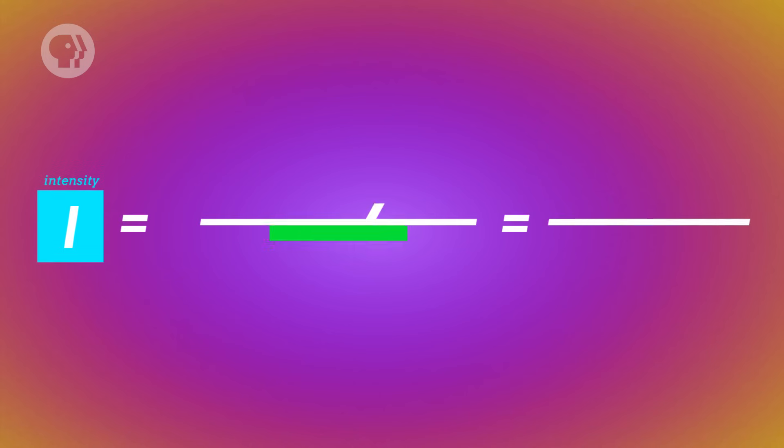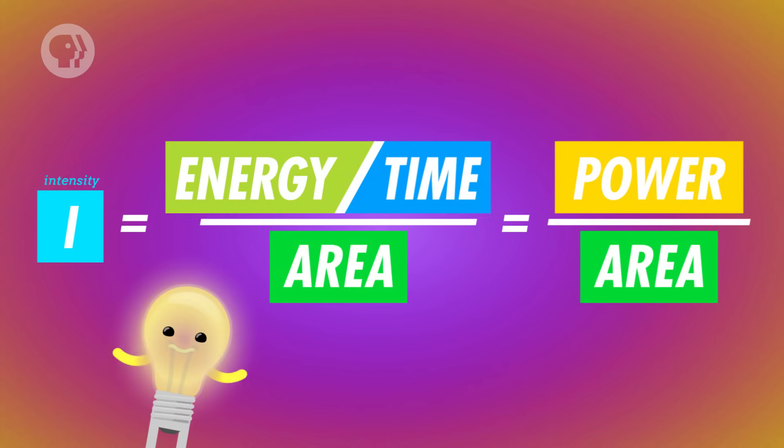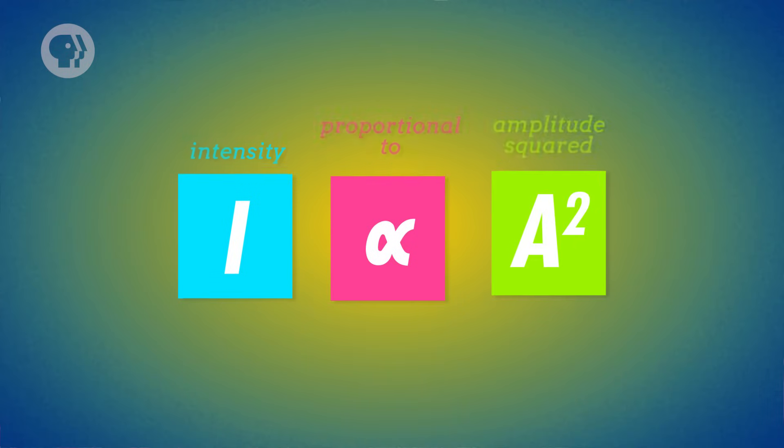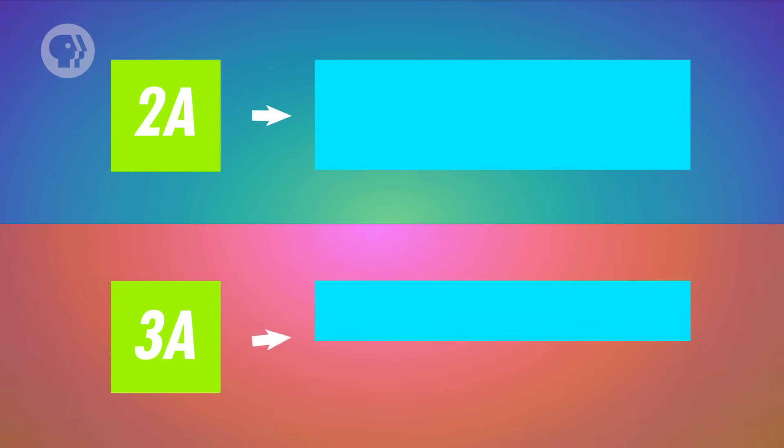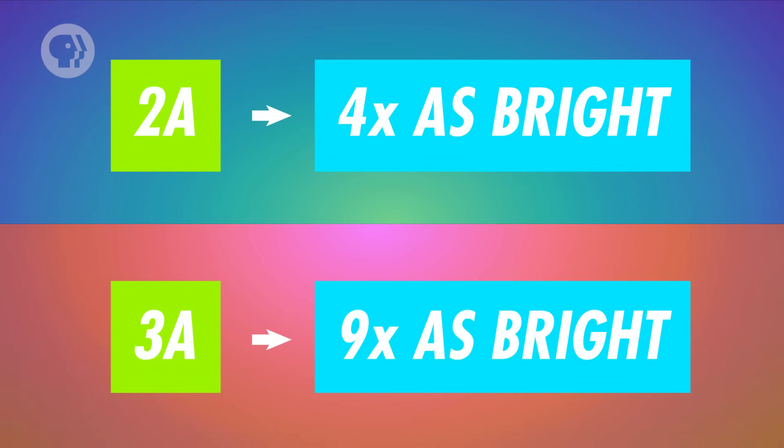Now, since light is a wave, it has the same properties as other waves. Intensity, for example, is the energy transported by the light per unit area over time. Essentially, intensity is the brightness of the light. As with other waves, intensity is proportional to the amplitude squared. So if you double the amplitude of a wave's peaks, it gets four times as bright. If you triple the amplitude, it gets nine times as bright.